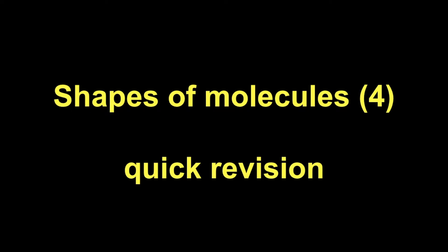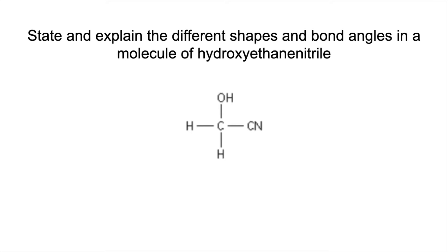This is the fourth quick revision video on shapes of molecules. I've made this one slightly more difficult by not giving the fully displayed formula of the molecule. We've got this organic molecule, hydroxyethane nitrile, and we've got to pick out and explain all the different shapes and bond angles in that molecule. If you want to have a go at that, pause the video and then play on when you're ready for the answers.